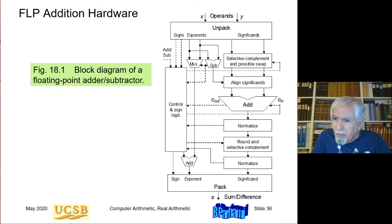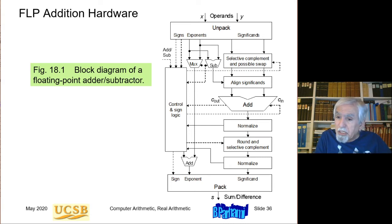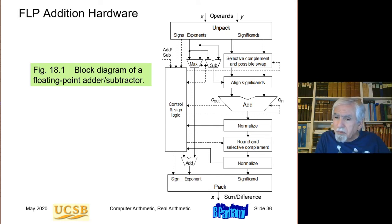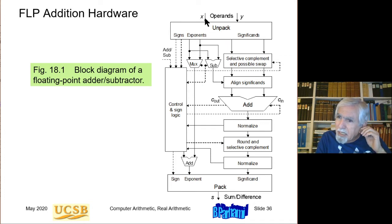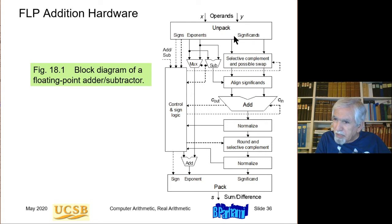Here is a block diagram of a floating-point adder. The first thing to note is that it's a pretty complicated piece of hardware; the addition itself is only a small part. There is an unpack box that takes the two operands, separates the sign bits, exponents, and significands, and inserts the hidden one. The significands as stored in the operands do not have the hidden one — it must be reinserted before any arithmetic is performed.